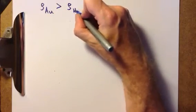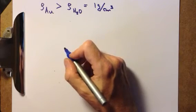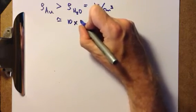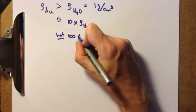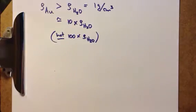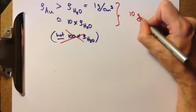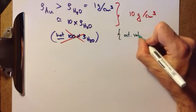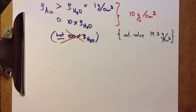We might not know exactly the density of gold, but surely gold is more dense than water. The density of water we know: that's 1 gram per cubic centimeter. It's more than water, but not that much more — maybe of the order of 10 times the density of water. Surely it's not 100 times the density of water. So let's work with a density of gold of 10 grams per cubic centimeter. If you look it up, the actual value is 19.3 grams per cubic centimeter, but we're guessing, so we work with 10.